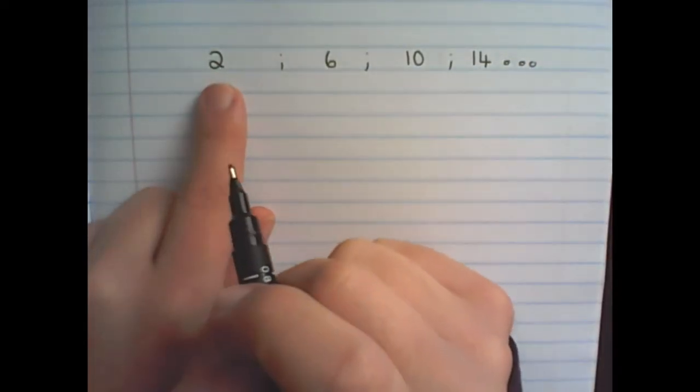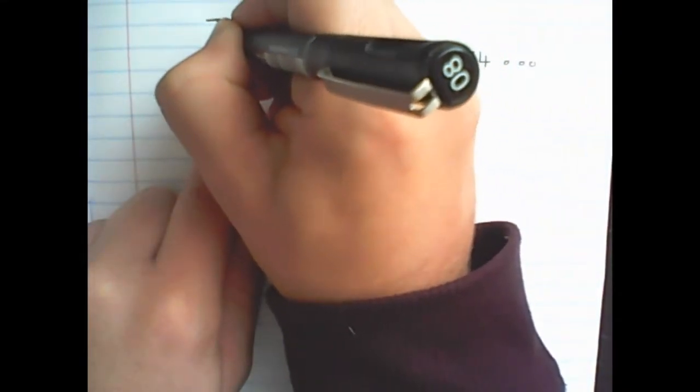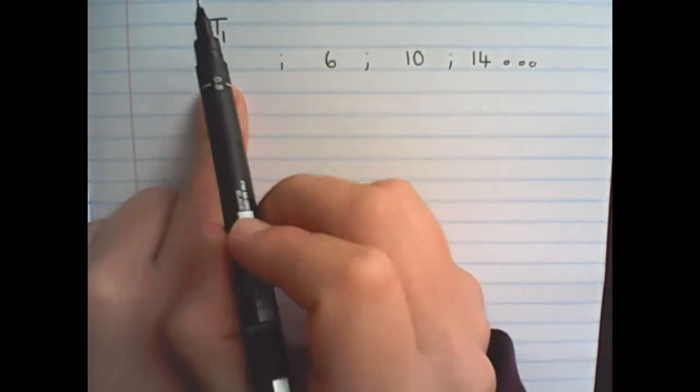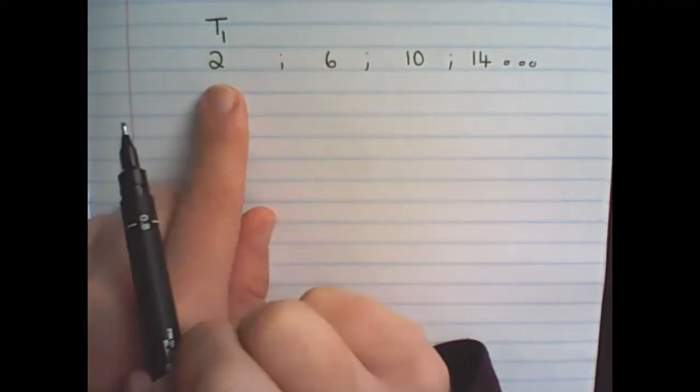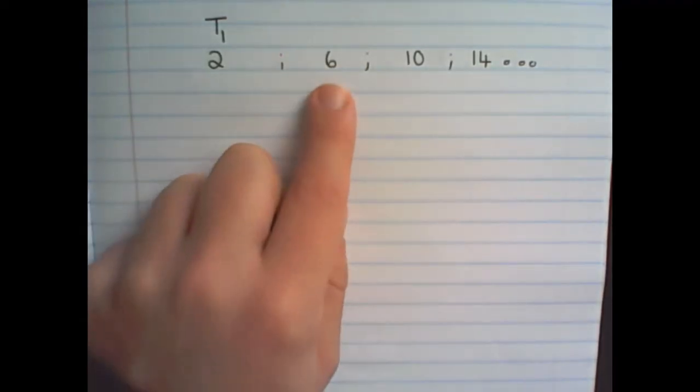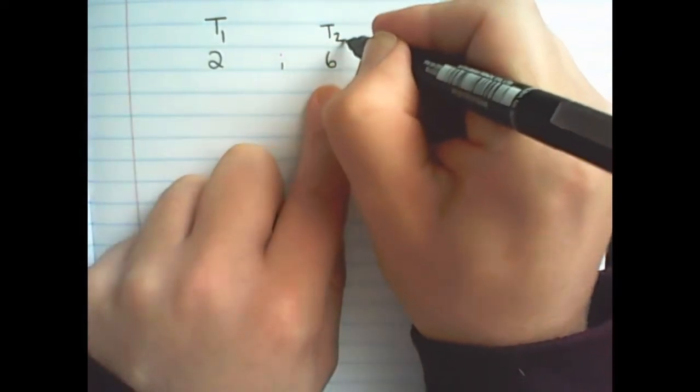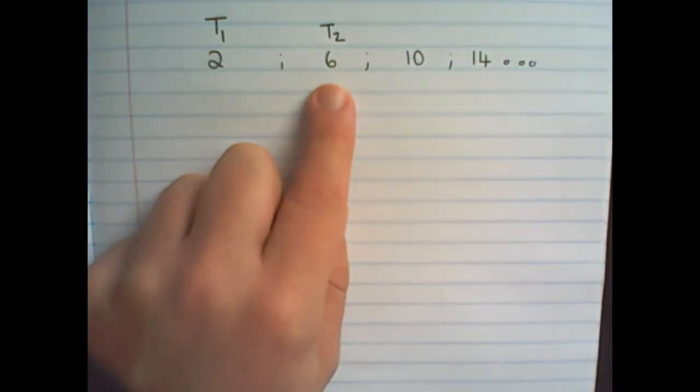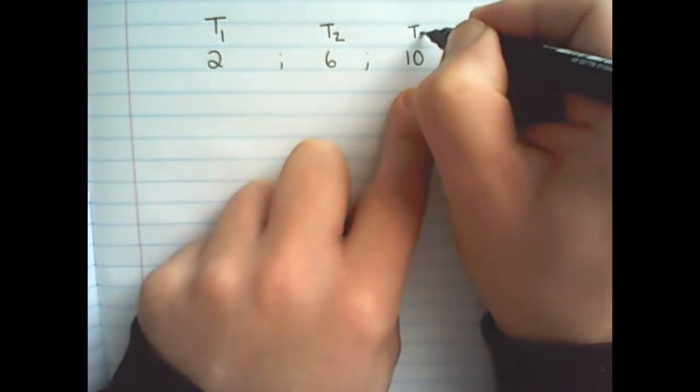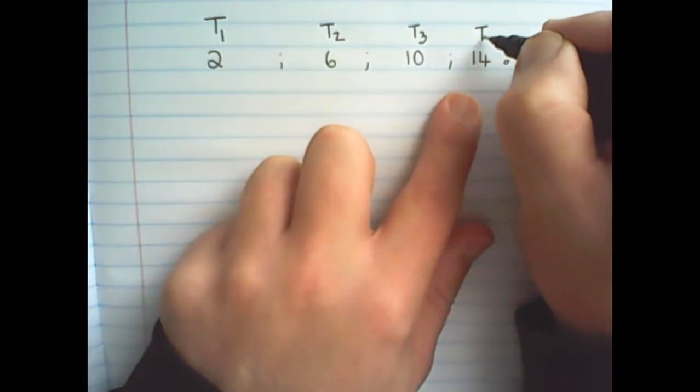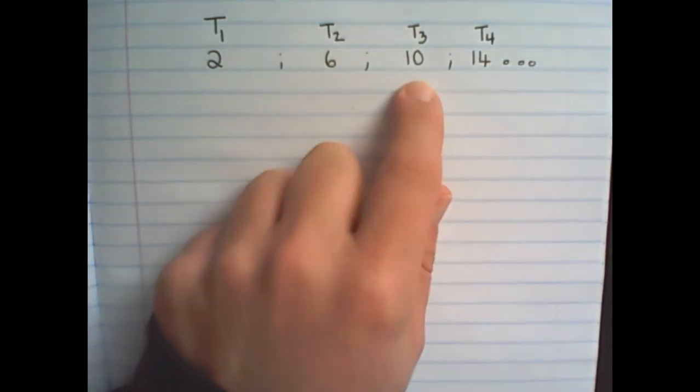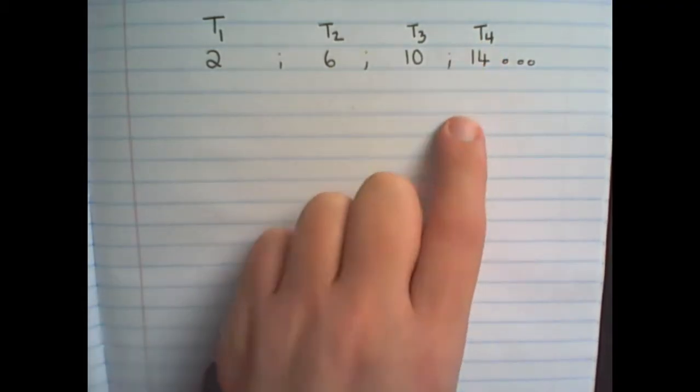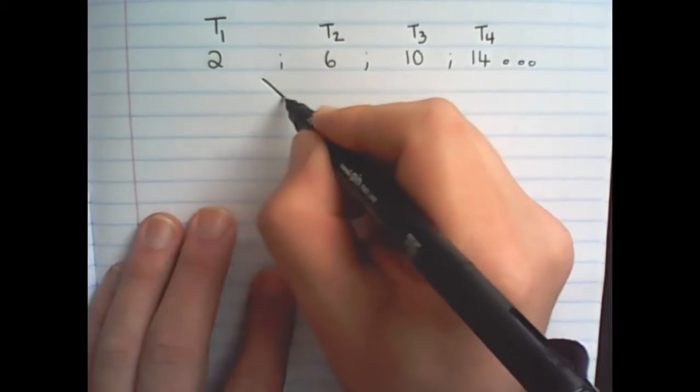The first number in the pattern is called the first term, and the notation that we use is T1. T1 then means Term 1 in the pattern. The next number, 6, would be called Term 2. And the number thereafter, Term 3, and then Term 4. So 10 would be the third term in the pattern. And 14, the fourth term in the pattern.